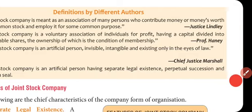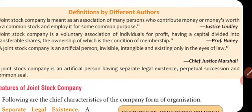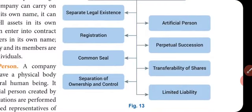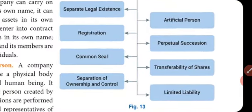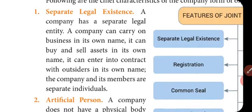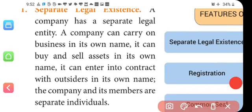Terms like perpetual succession and common seal will come up when we discuss features. There are seven features: separate legal existence, registration, common seal, separation of ownership and control, artificial person, perpetual succession, transferability of shares, and limited liability. Let's discuss them one by one.